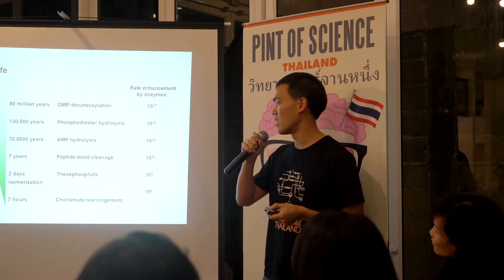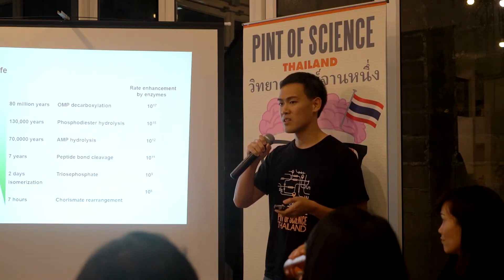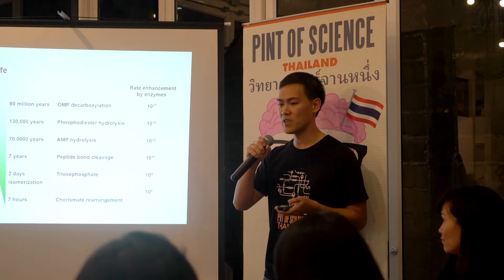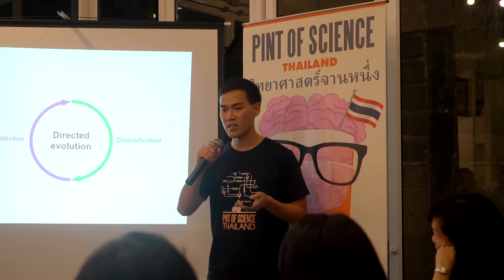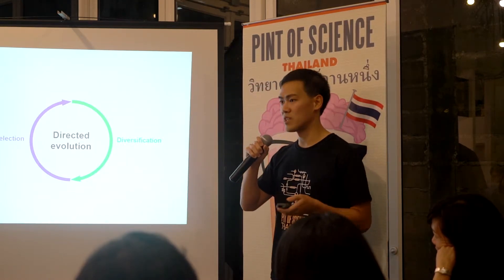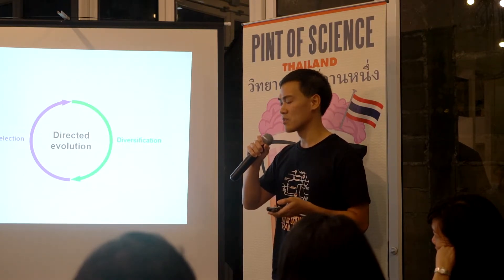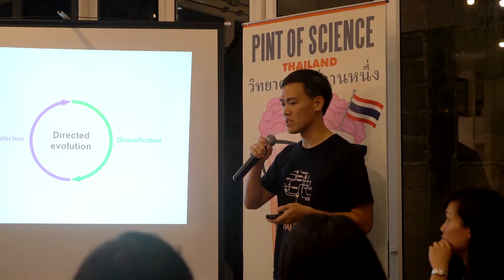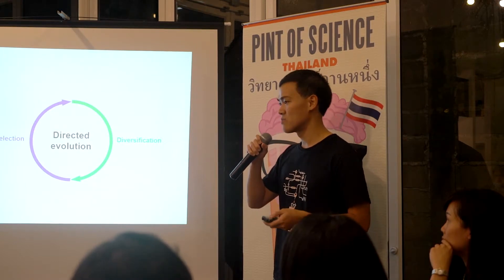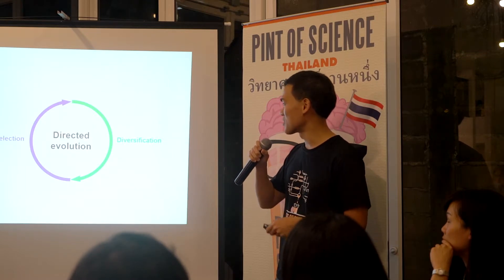We can really harness the power of evolution to create things that we don't have in nature. Using directed evolution — in the same way that nature does — we can engineer enzymes to feed our needs. The process of directed evolution consists of the same two steps as natural evolution: diversification and selection.